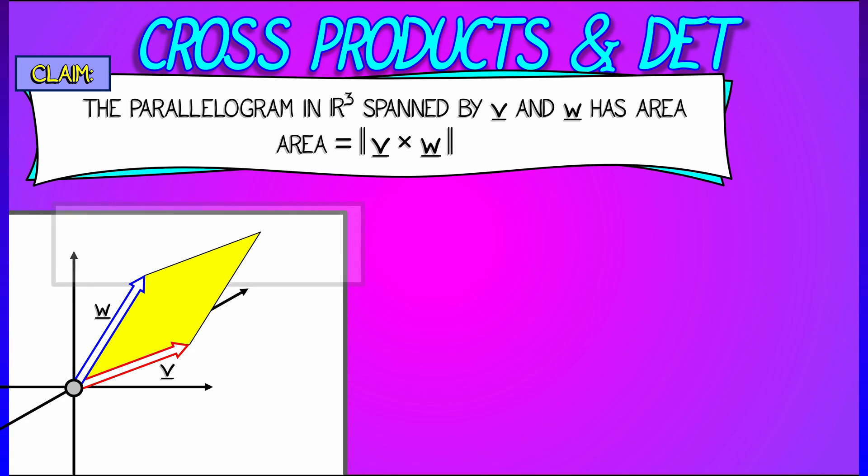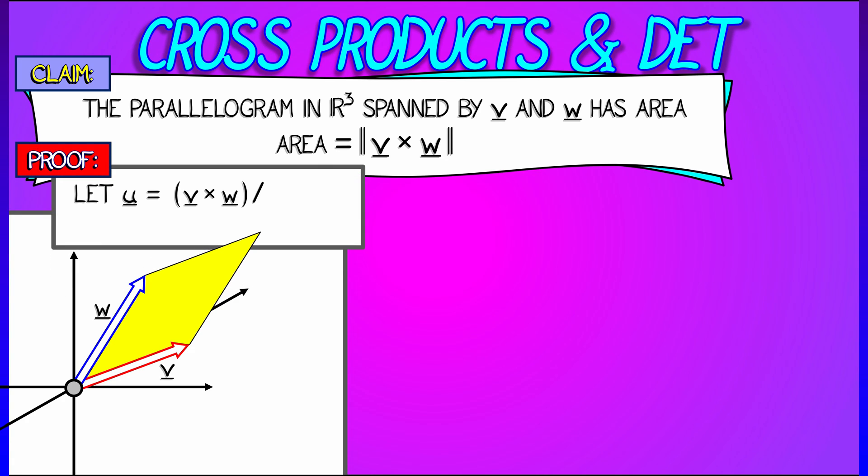I'm going to take those two vectors, v and w, look at the parallelogram spanned by them, and define u to be the cross product normalized to a unit vector. So I take that v cross w, I divide by the length of that, assuming it's non-zero.